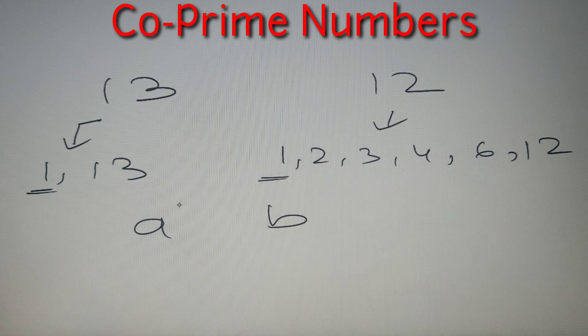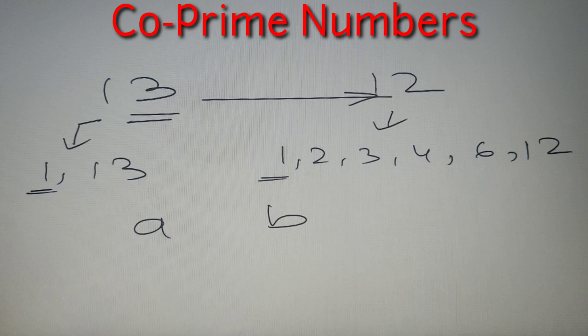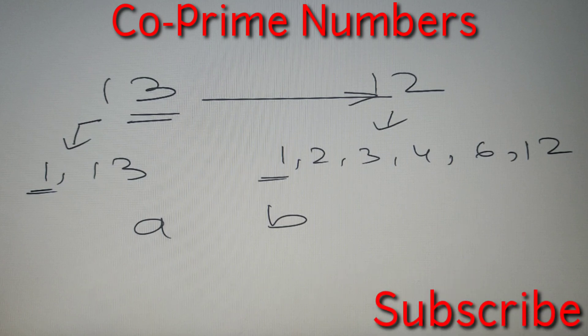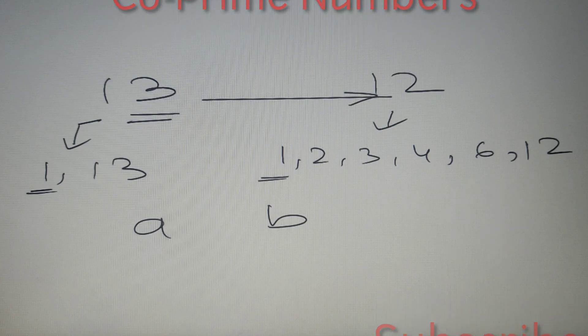Now note that all prime numbers are co-prime to every other number. So you can see that 13 being a prime number is co-prime to every other number. I will provide a very detailed video on co-prime numbers very soon on this channel. So if you haven't subscribed our channel then please do so because you should not miss any chance of learning something new and amazing.